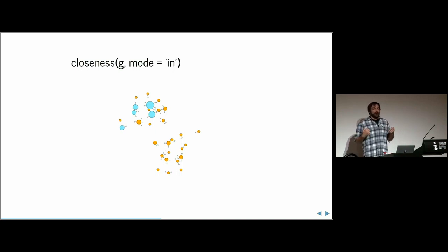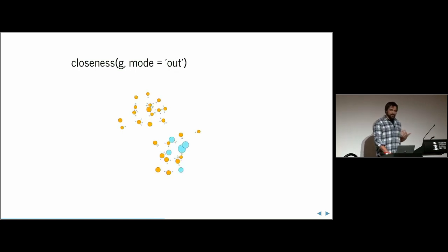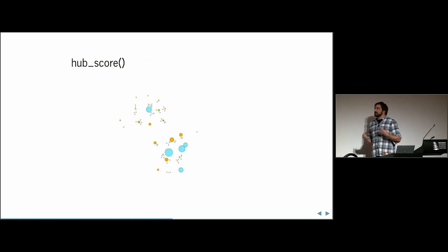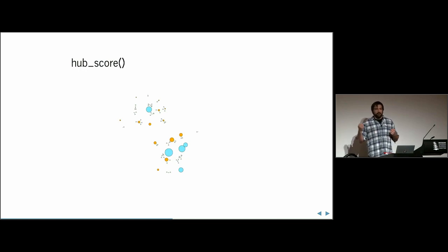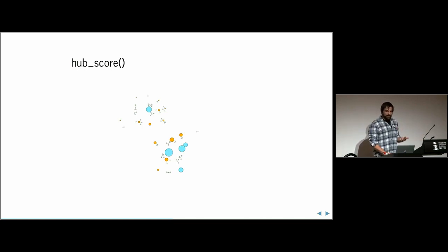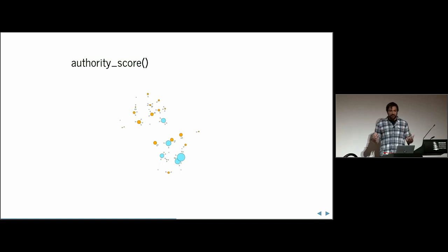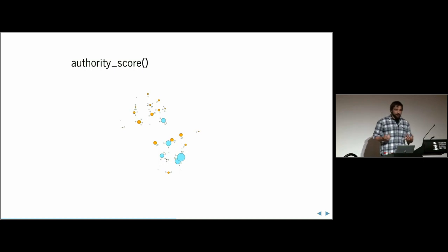There's also closeness, which represents how many nodes a certain node is closest to. Again, the direction of the edges matters — if you care about inward, outward, or all nodes, you'll get a different score. And there's the idea of a hub: if you think of a website, a hub is a website that links to a lot of other websites. The other side is an authority — a website that has a lot of people linking to it. A good example of a hub would be Google, which can link you to almost everything.